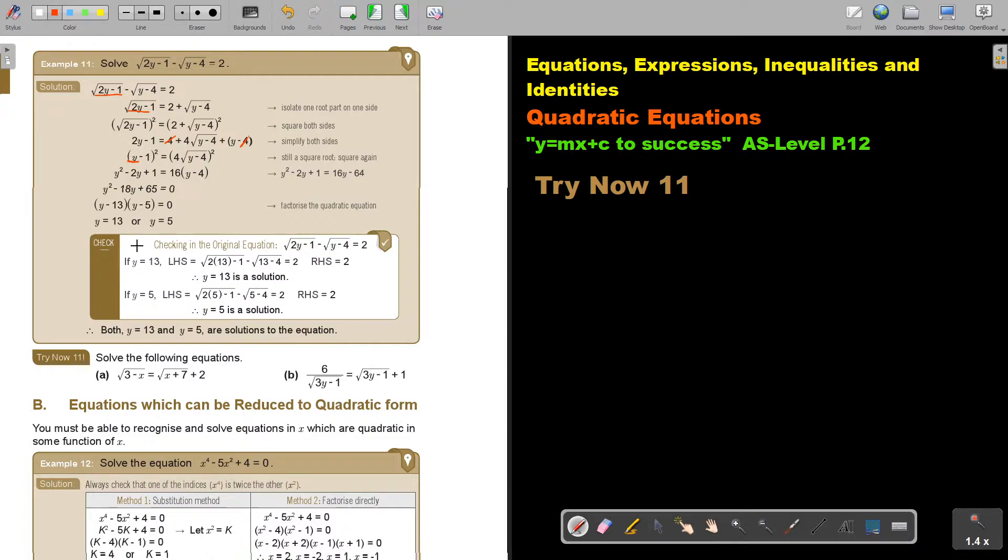And then I factorize. Don't forget your test. If I put it in the first one, 1, the right-hand side equals 2, so it's a solution. And if I put the 5, it's again 2, it's also a solution. Therefore, Y is equal to 1 and Y is equal to 5 are solutions to the equation. So it can happen that you have both solutions to the equation.